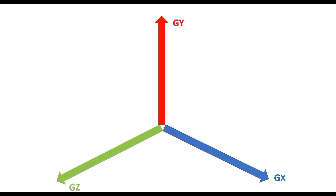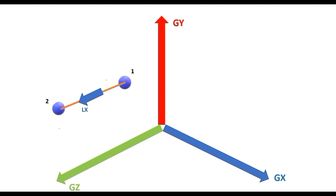Let us consider this beam defined from node 1 to node 2, parallel to the global Z-axis. Thus the local X-axis is defined from node 1 to node 2. To identify the beta-zero condition we have to set one additional condition which will help us define the third axis. In this case, the additional condition is that the positive direction of the local Y-axis is considered in the same direction as the positive direction of the global Y-axis.